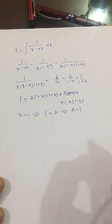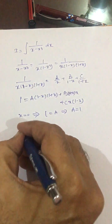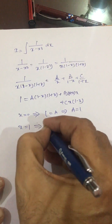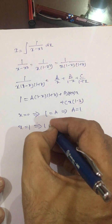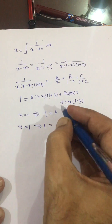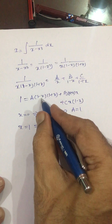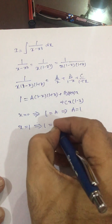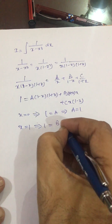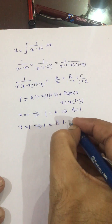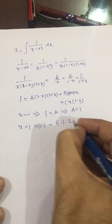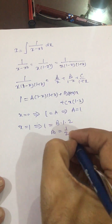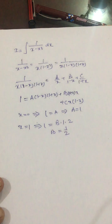Putting x equal to 1, the A term becomes 0 and the C term becomes 0, leaving 1 equals B times 1 times 2. So B equals 1 over 2.